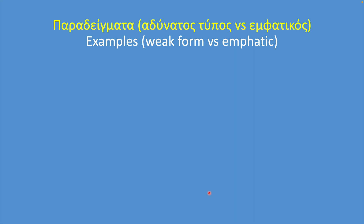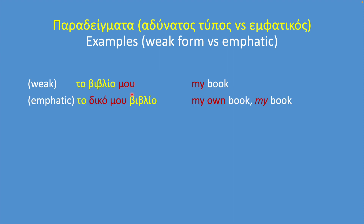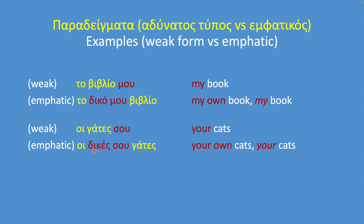Let's see how they are used compared to the weak ones. Weak type: το βιβλίο μου — my book. Emphatic type: το δικό μου βιβλίο — my own book. Another example. Weak type: οι γάτες σου — your cats. Emphatic type: οι δικές σου γάτες — your own cats.